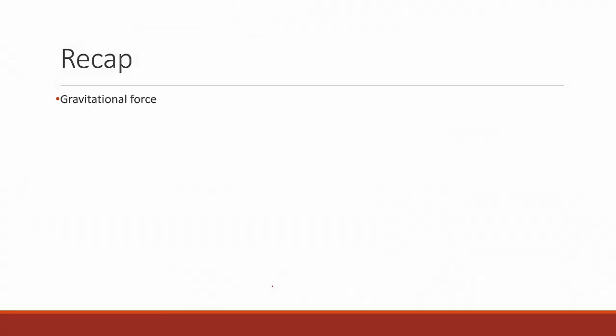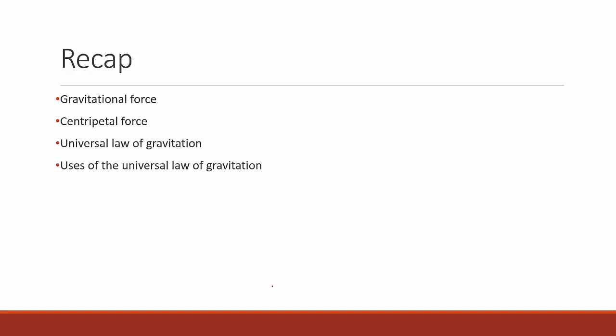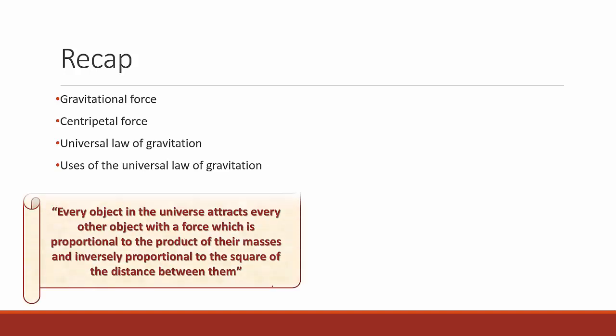We saw what was gravitational force, we saw what was centripetal force, we saw the universal law of gravitation, and then we saw its uses. To recap: the universal law of gravitation states that every object in the universe attracts every other object with a force proportional to the product of their masses and inversely proportional to the square of the distance between them.